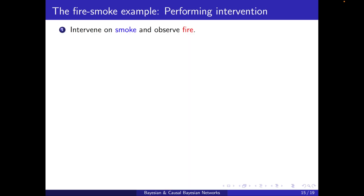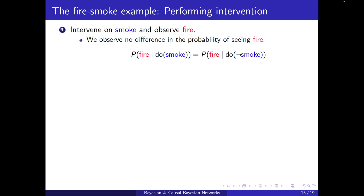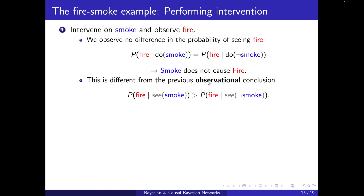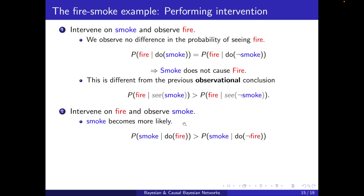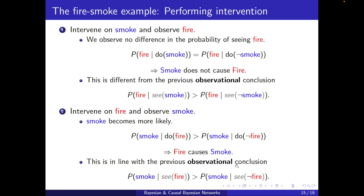If I intervene on smoke and observe fire, the probability of fire does not change whether I create smoke or prevent it — and creating smoke here means doing it without ignition. From this I conclude that smoke does not cause fire. Note this is different from the observational conclusion, where P(fire | smoke) was greater than P(fire | no smoke). Conversely, if I intervene on fire and observe smoke, smoke becomes more likely when I make fire compared to when I prevent it. So fire does cause smoke.